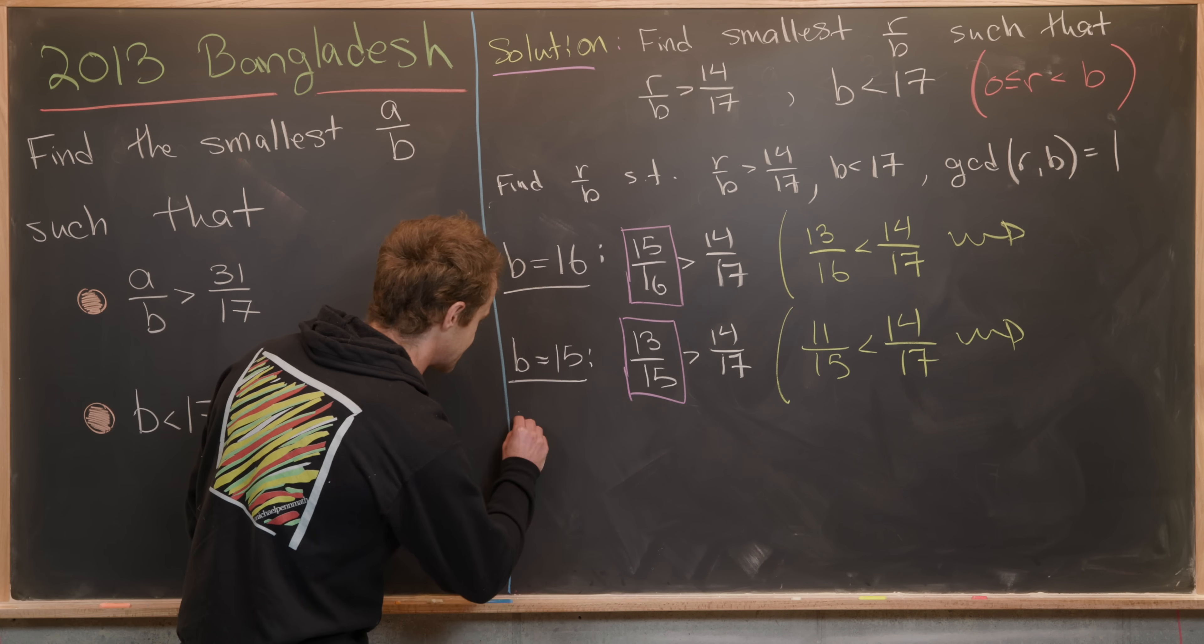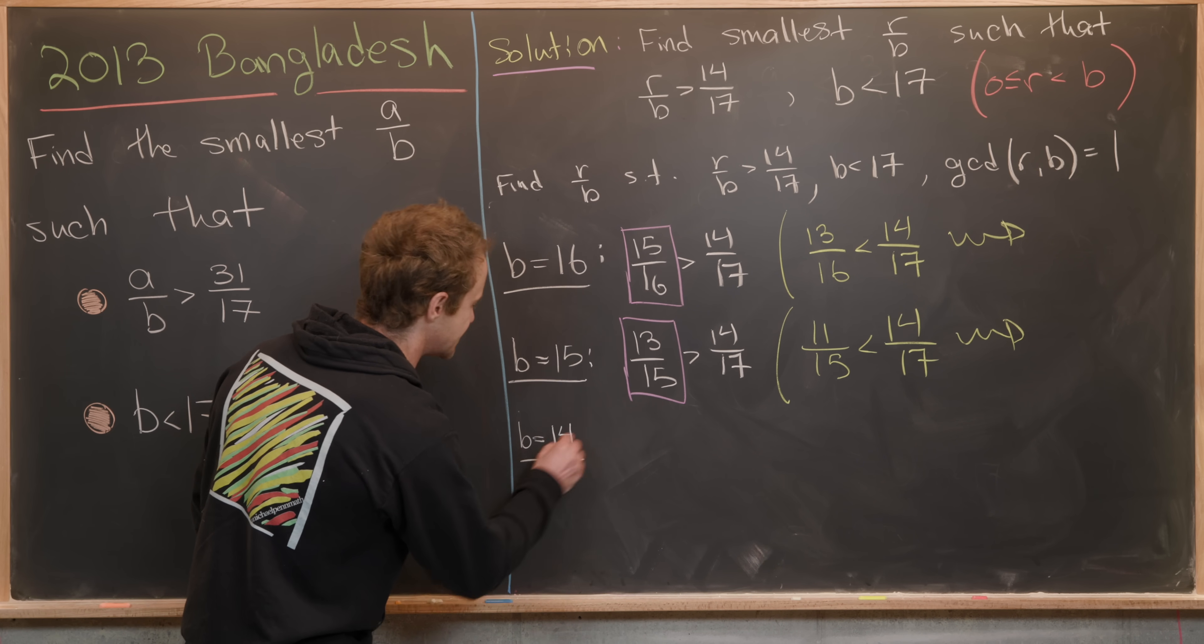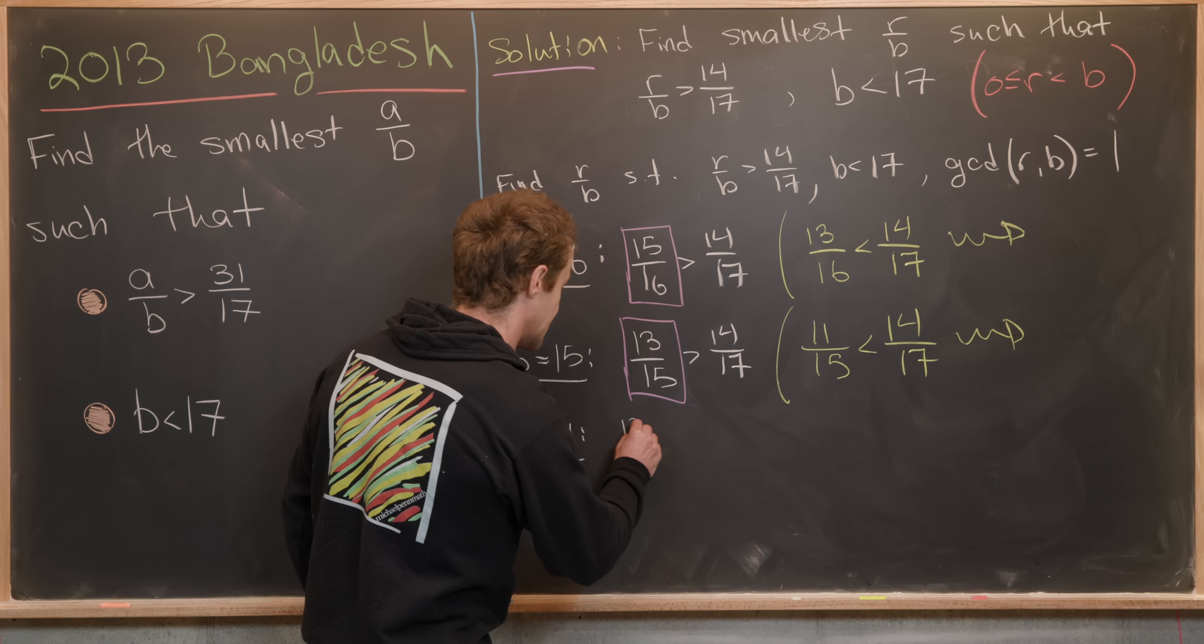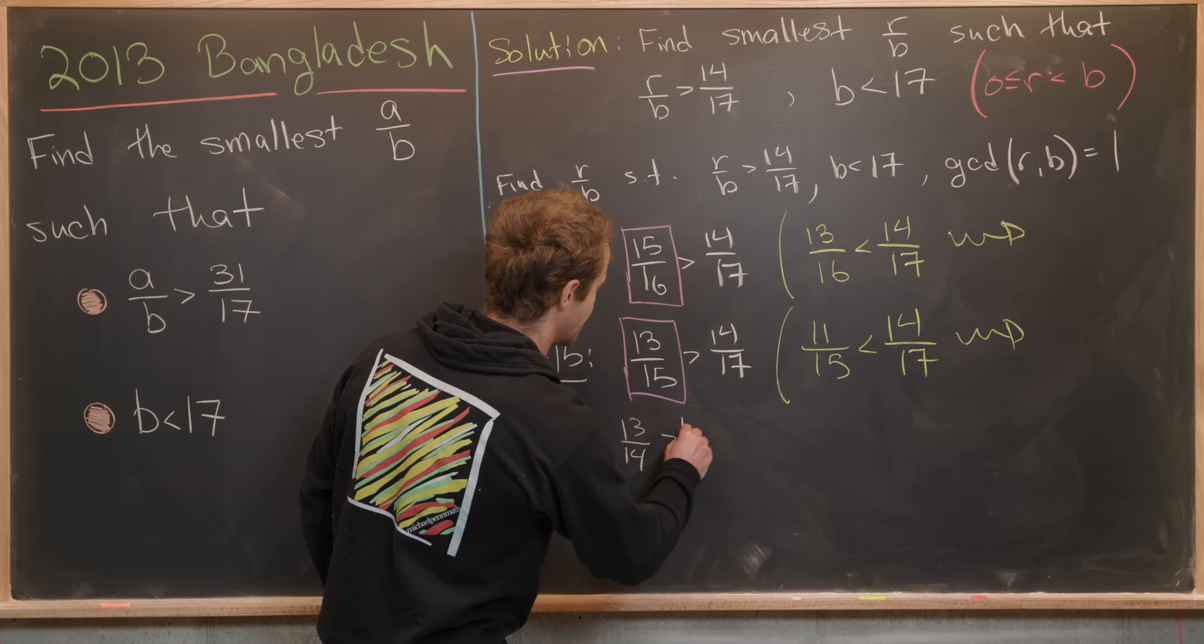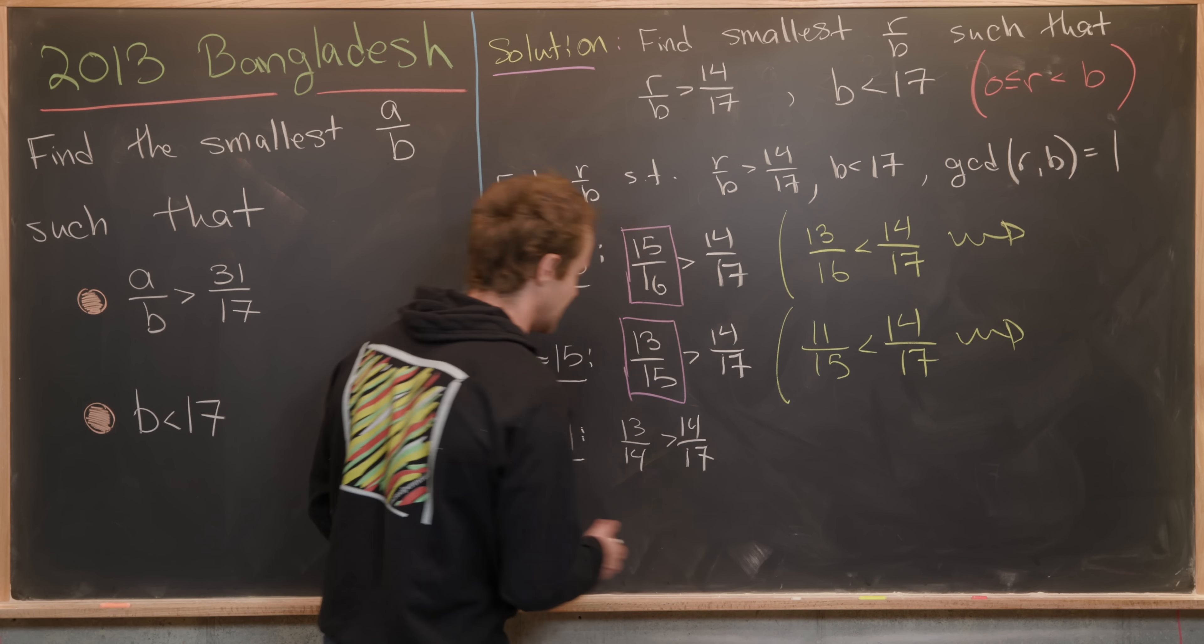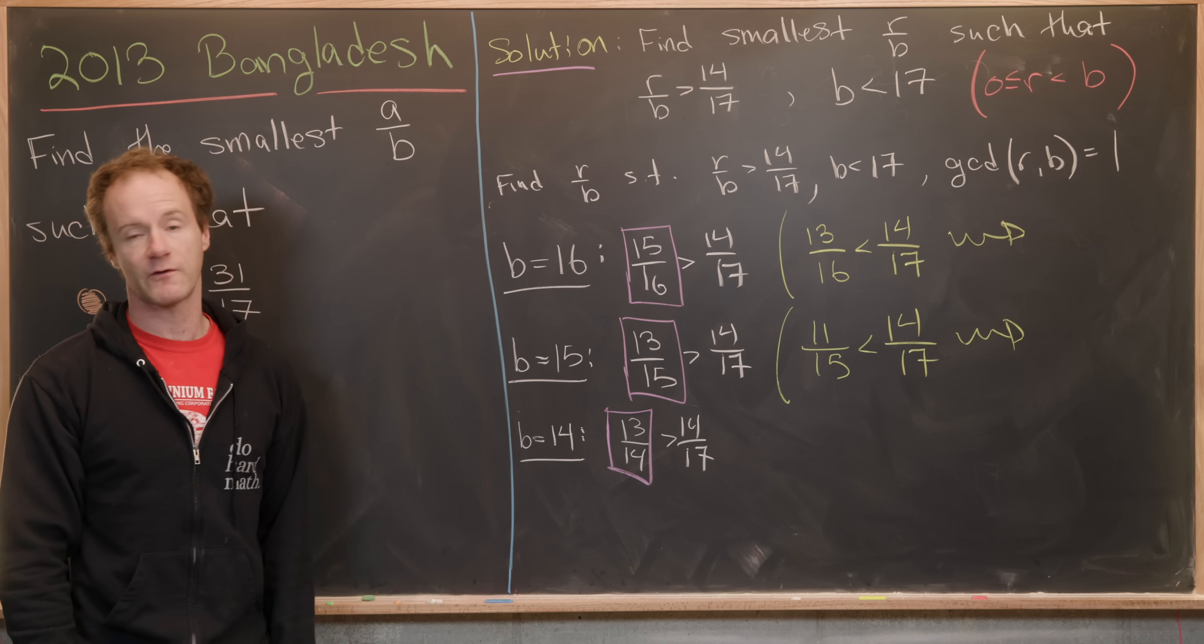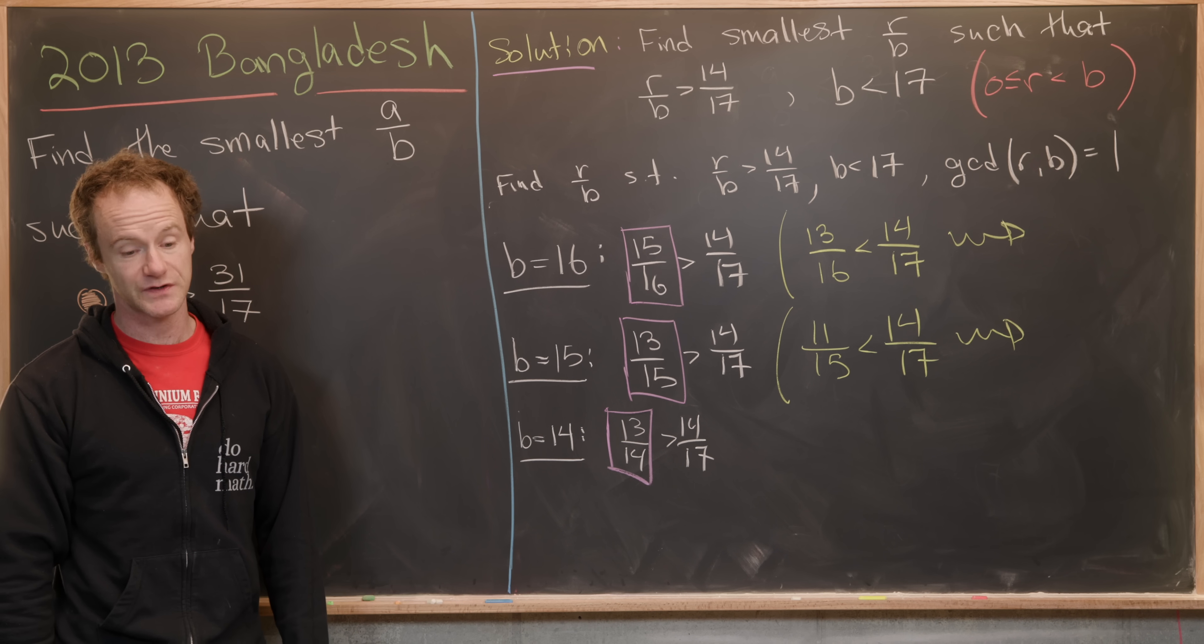Next, let's look at B equals 14. You can check that 13 over 14 is bigger than 14 over 17. But if you move smaller, notice 12 over 14 doesn't need to be checked because that would be reduced.